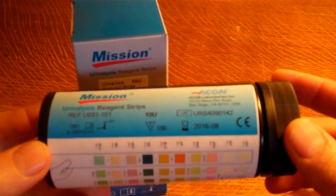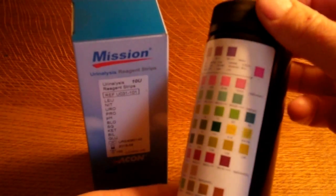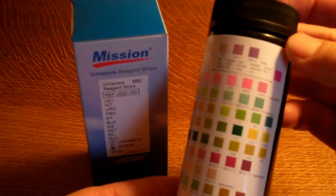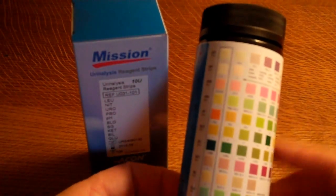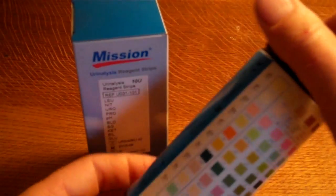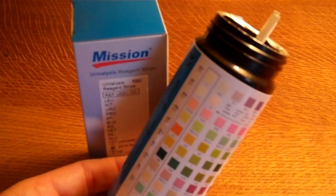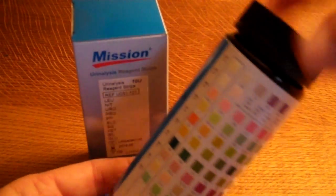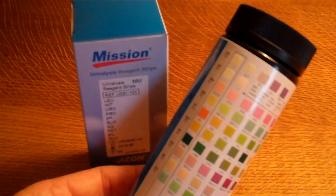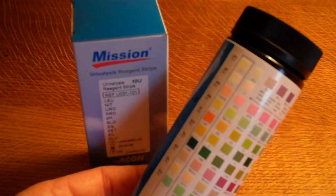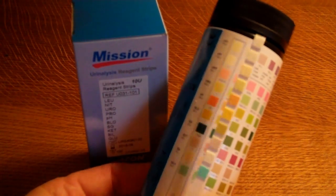On the pack attachment you've got these 10 parameters, and if we remove one of the test strips from the vial you will see that on the test strip you have a matching 10 parameters.